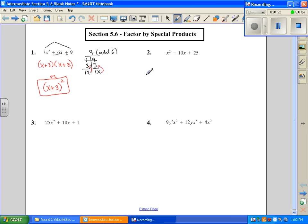We'll move on to number 2. We check for GCF, and there is none. So we find what multiplies to give us 25, but it's going to add to give us negative 10. So we have 25 times 1. That's not going to work. And then we have our 5 times 5.